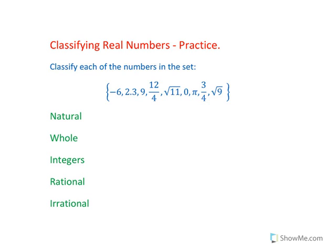Remember the definitions. Natural numbers are numbers that you can count. Whole numbers are natural numbers plus zero. Integers are whole numbers plus their opposite.